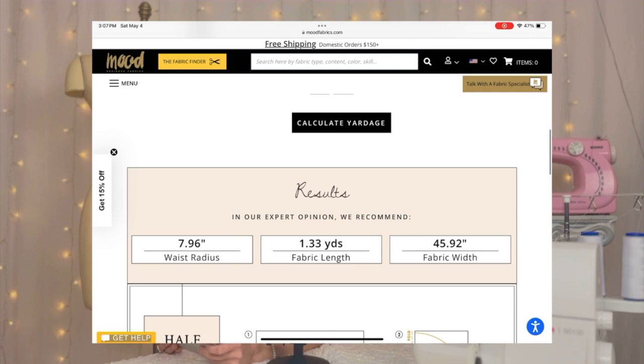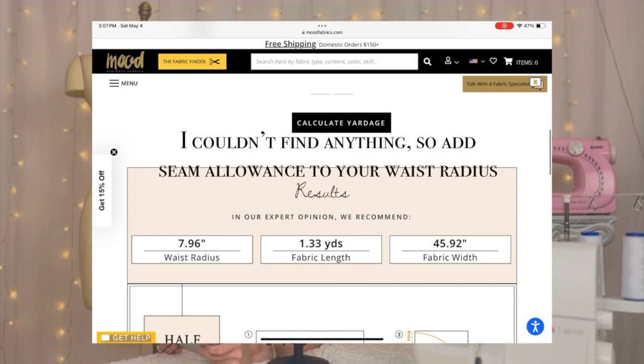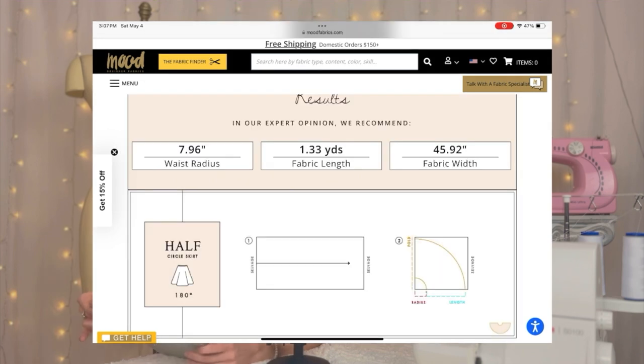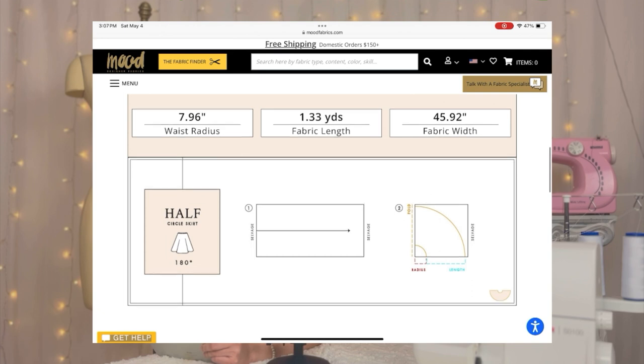I'm pretty sure this already includes the seam allowance which is half an inch, but I'm going to make sure. So here it says my waist radius needs to be 7.96 inches - I'm going to explain what that is later. My fabric length is 1.33 yards and fabric width 45.92 inches.